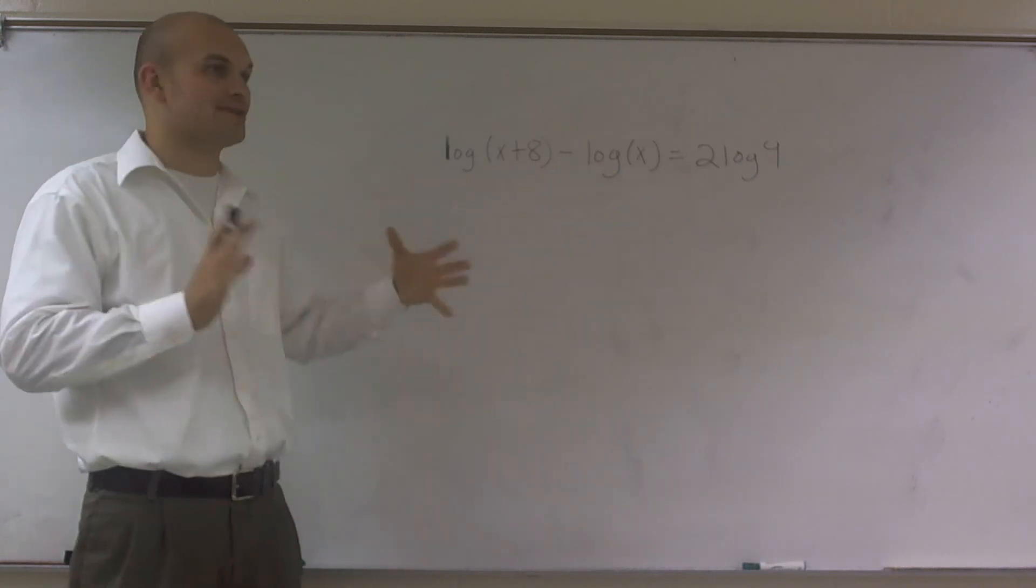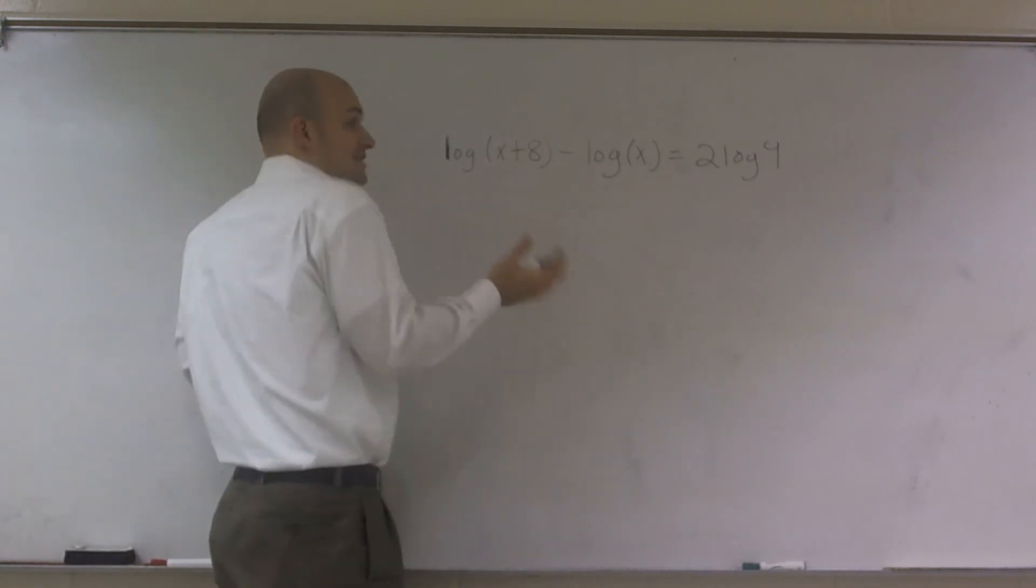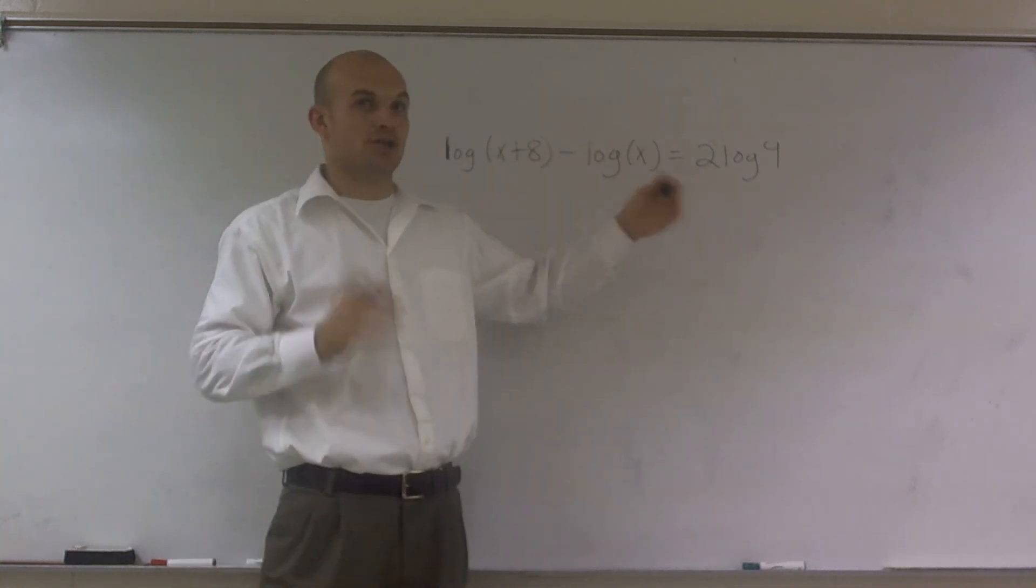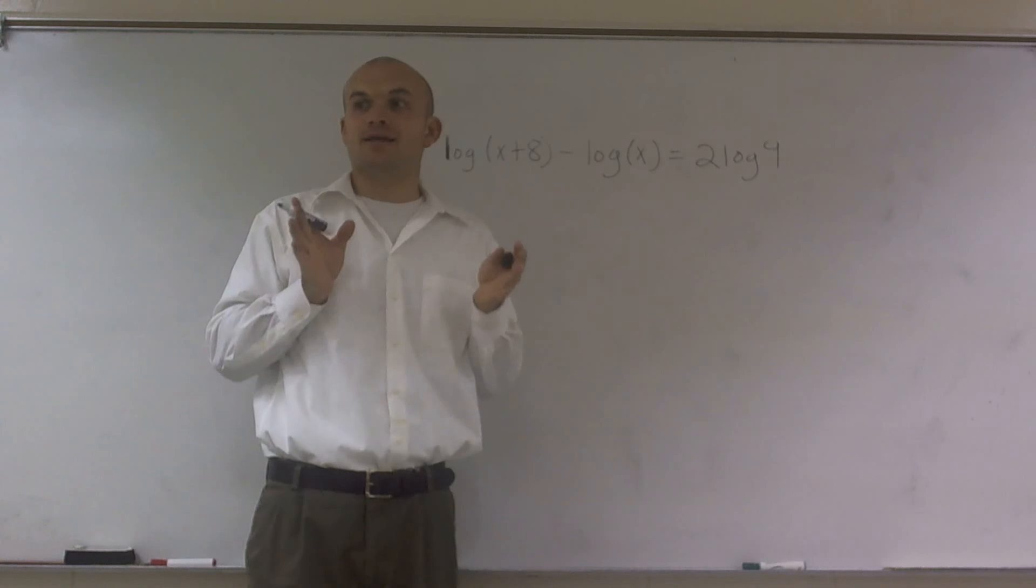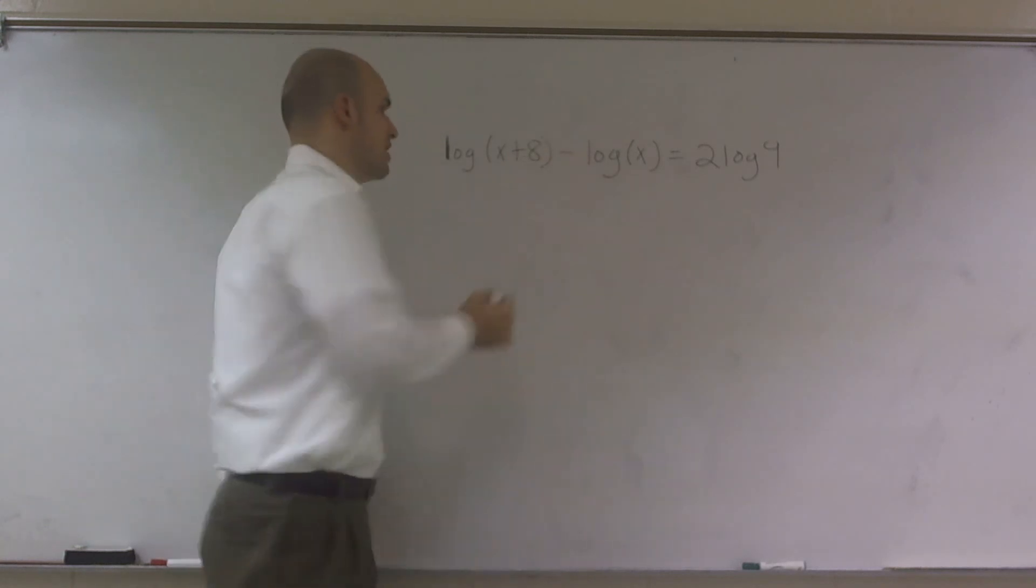So what I want to do is use my properties of logarithms, condensing it to get this down to at least two logarithms. I can condense these. Remember, whenever you have a log subtracting another log, you can condense them by division and using one log.